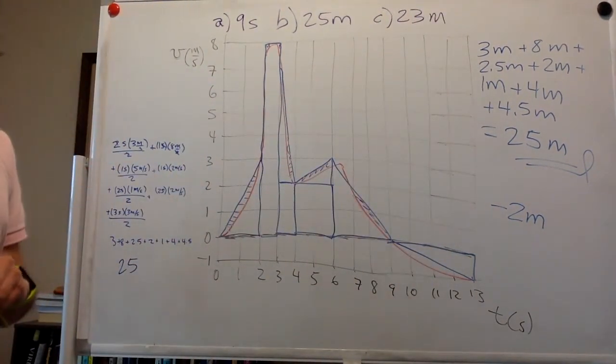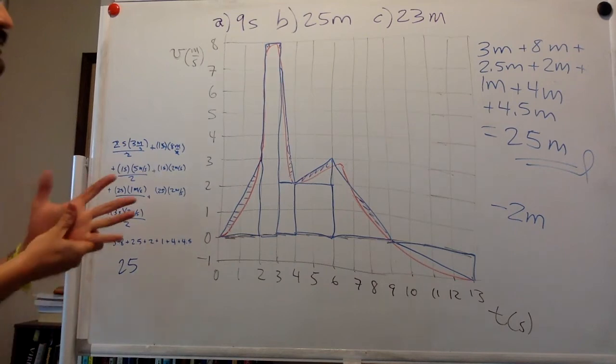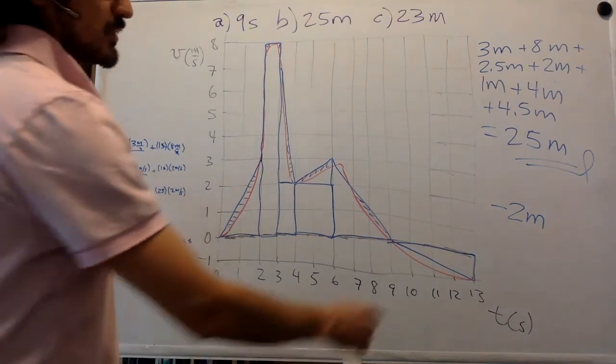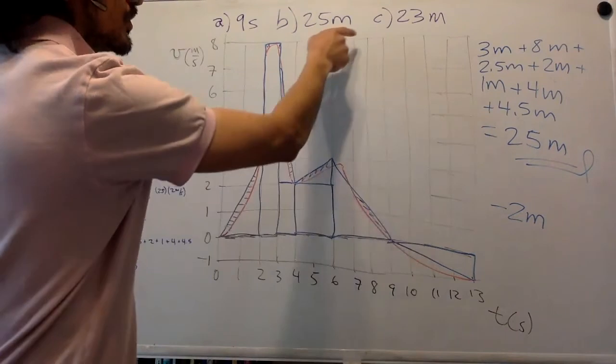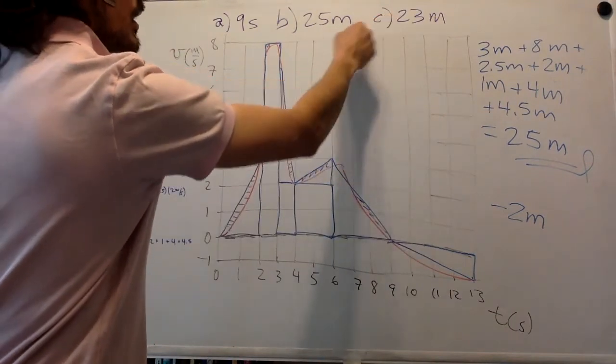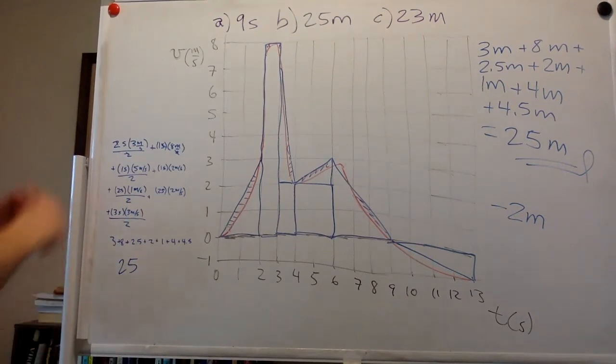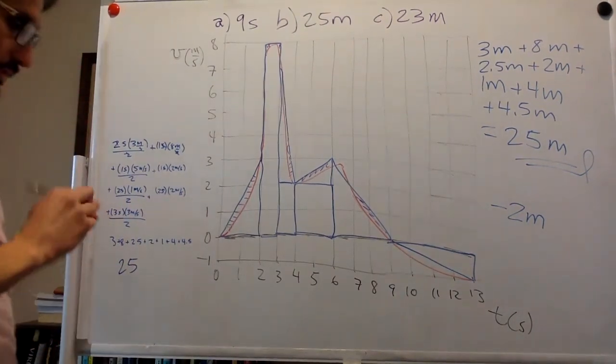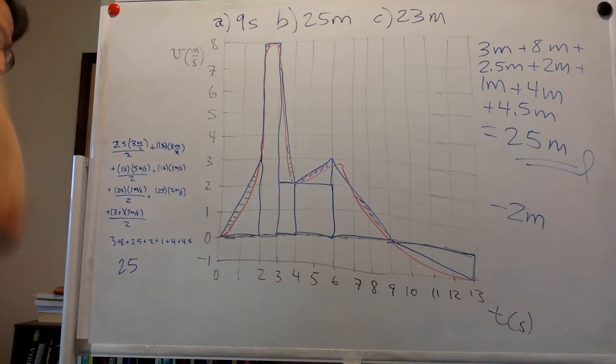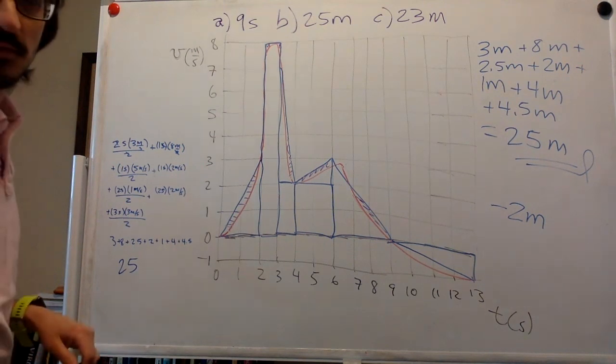So the answer for C will be 23 meters. And the answer on the homework says 20, which is the same, right? It is subtracting two or so from their answer of 22. But yeah, this is just another problem of looking at the area under the curve. Thank you.